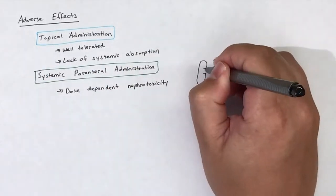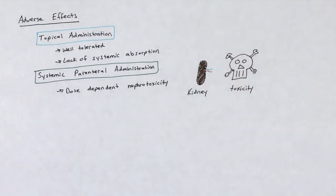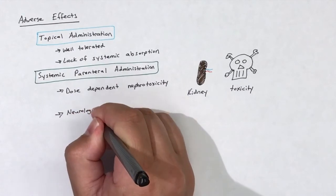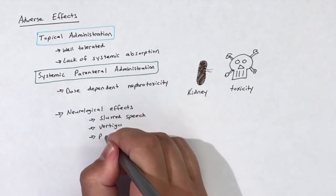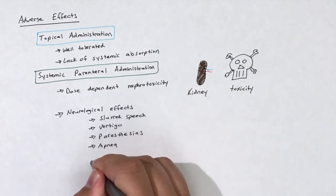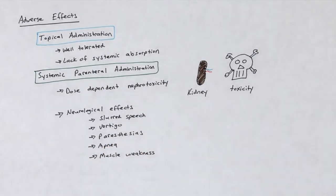Systemic parenteral administration of polymyxins is toxic and leads to dose-dependent nephrotoxicity. Neurological adverse effects can accompany the nephrotoxicity. These adverse effects include slurred speech, vertigo, paresthesia, apnea, and muscle weakness.